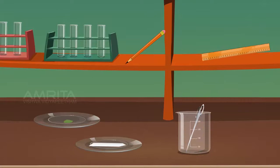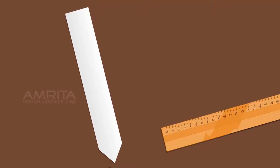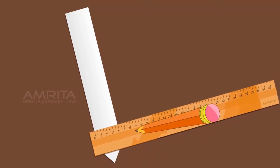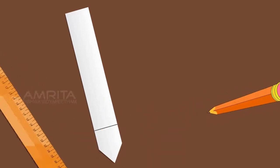Take a filter paper strip with a narrow notch at one end of the strip. Using a pencil and scale, draw a horizontal line about 2-3 cm away from the tip of the notch.